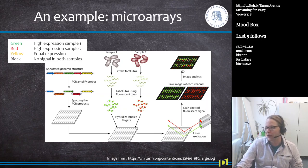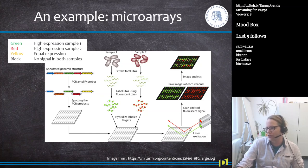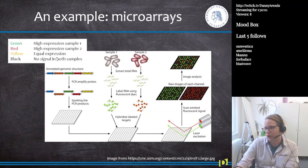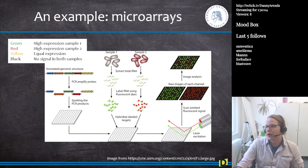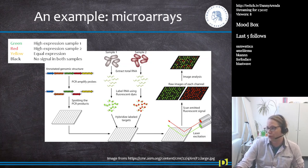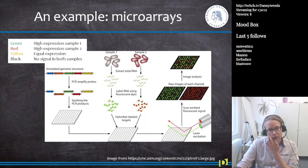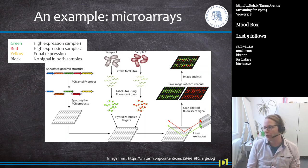So in the microarray picture, if a dot is green, the gene was highly expressed in sample one. If a dot is red, the gene was highly expressed in sample two. If it is yellow, it's not interesting because there was no difference between the two samples. And if it's black, that means the gene or probe was not expressed in either of the two samples.